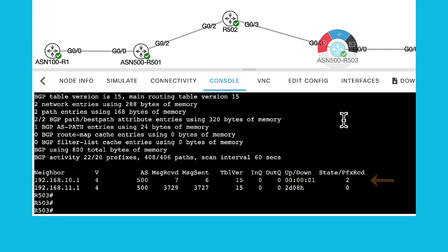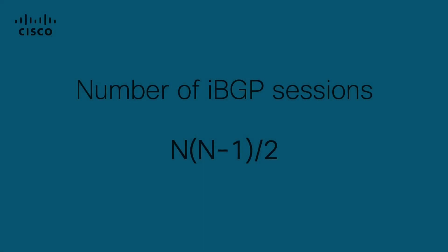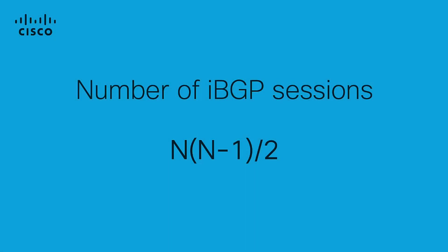The problem with full mesh is that it does not scale well, because you need to establish multiple IBGP sessions based on the number of IBGP speaking devices. The number of IBGP sessions needed are calculated with the following formula, where n is the number of IBGP routers.